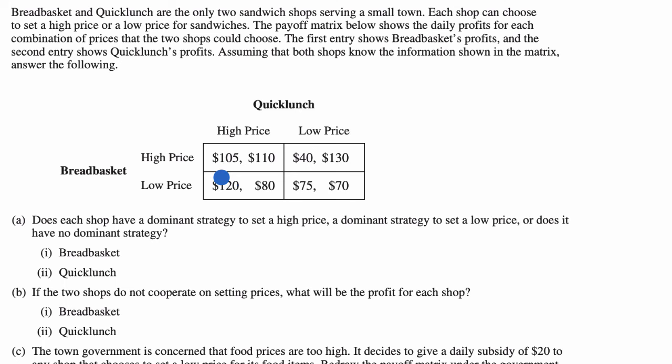To make sure we understand the matrix: if Breadbasket chooses high prices and Quick Lunch also chooses high prices, Breadbasket's profit per day would be $105 while Quick Lunch's profit per day would be $110. If Breadbasket is low and Quick Lunch is high, Breadbasket would make $120 and Quick Lunch would make $80. When Quick Lunch has low prices, we can see the profits for either Breadbasket charging high or low prices.